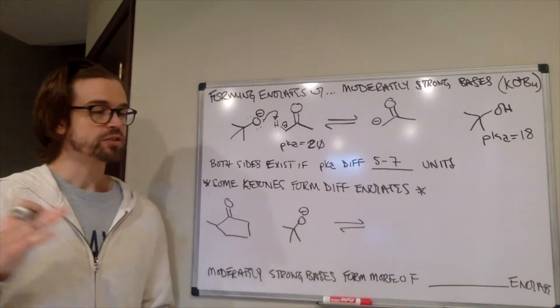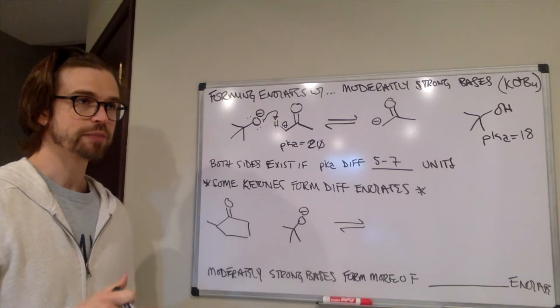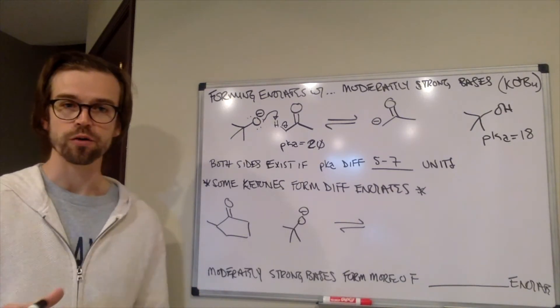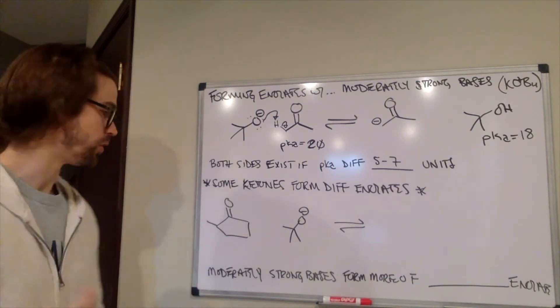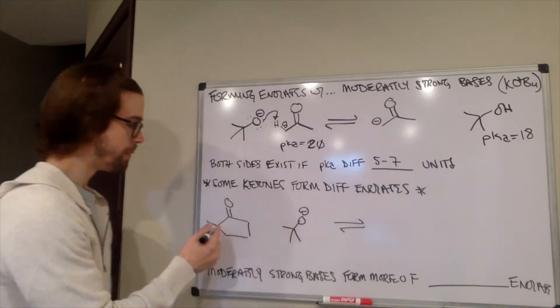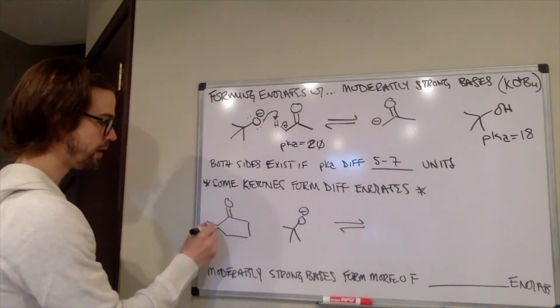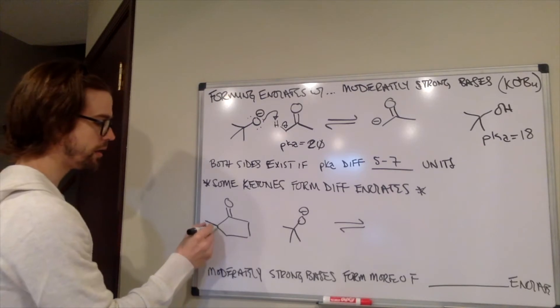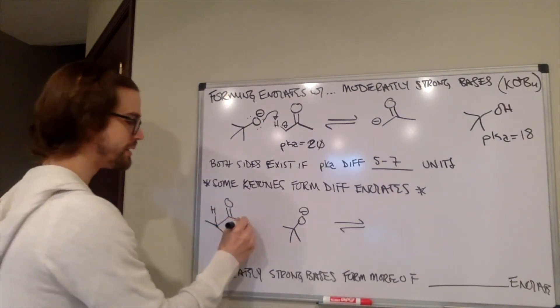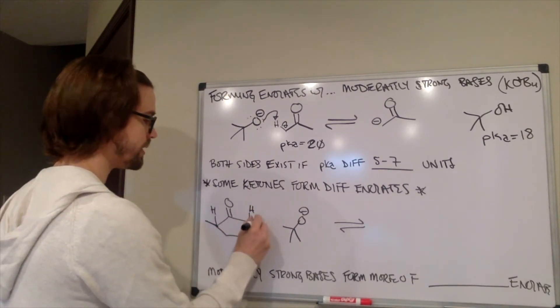And these moderately strong bases, sometimes we have a ketone that is non-symmetrical. This is a symmetrical ketone, but something like this is a little bit different, right? There's a CH3 group right here, so we have one H on this side, and two Hs on this side.